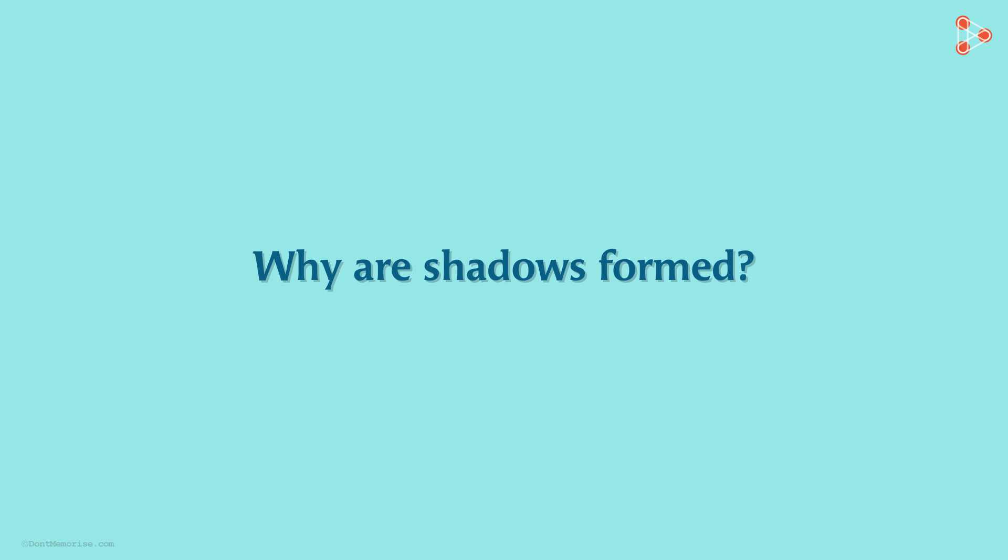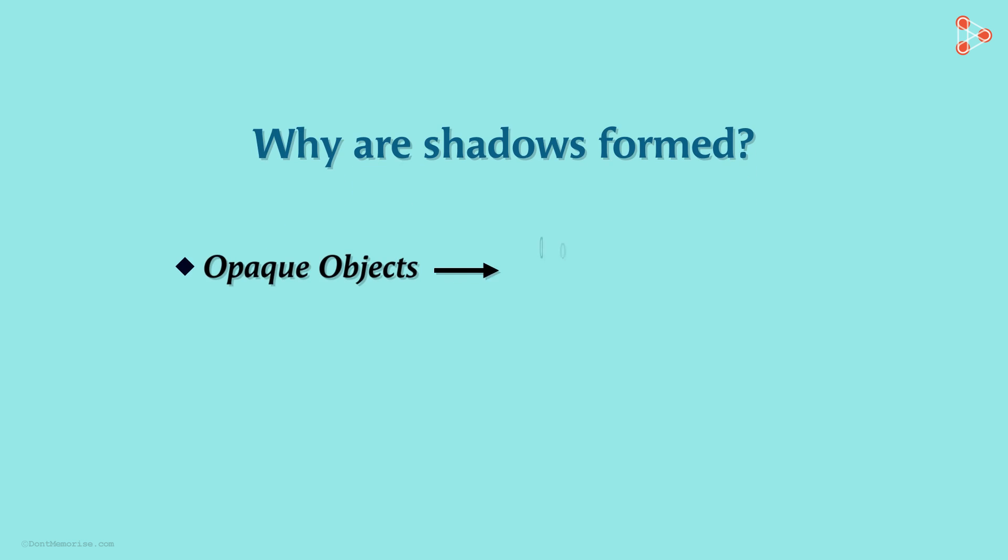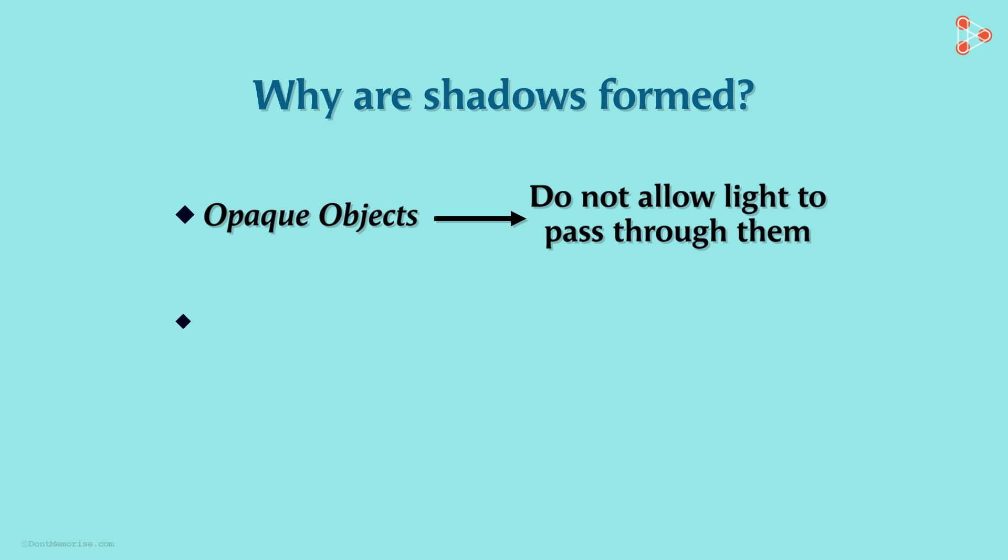Has it ever occurred to you as to why shadows are formed? We know one of the reasons. Opaque bodies do not allow light to pass through them. Yes, that's one of the main reasons why shadows are formed. Another important reason for shadows to form is that light travels in a straight line. We will see its use in our next lesson.